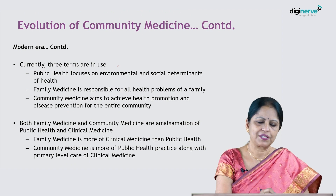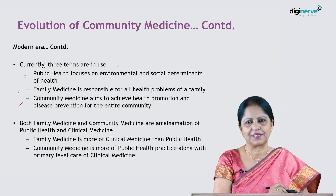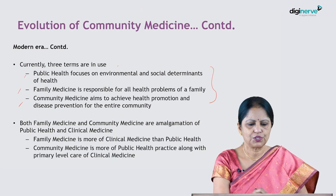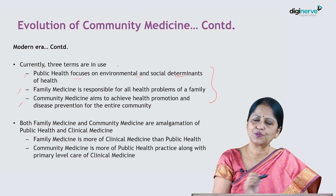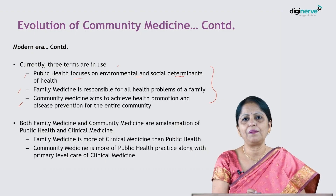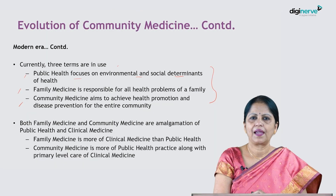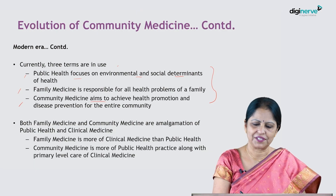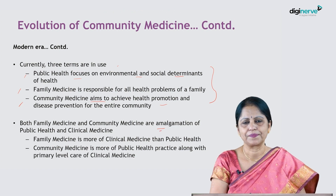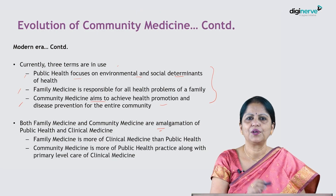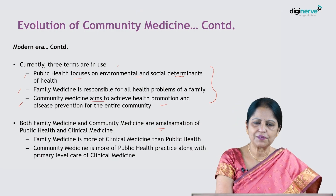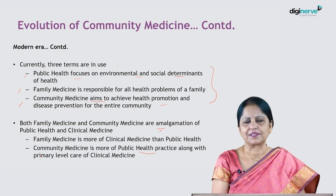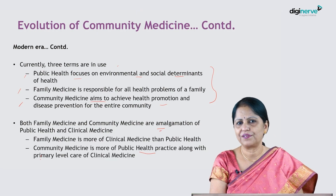Currently three terms are in use: public health, family medicine, and community medicine, and there are postgraduate courses in these three disciplines. Public health focuses on environmental and social determinants of health. Family medicine is responsible for all health problems of the family and maintaining health of all family members. Community medicine aims to achieve health promotion and disease prevention in the entire community. Both family medicine and community medicine are an amalgamation of public health and clinical medicine. Family medicine is more of clinical medicine with some aspect of public health, while community medicine is implementation of public health practice along with primary level health care of clinical medicine.